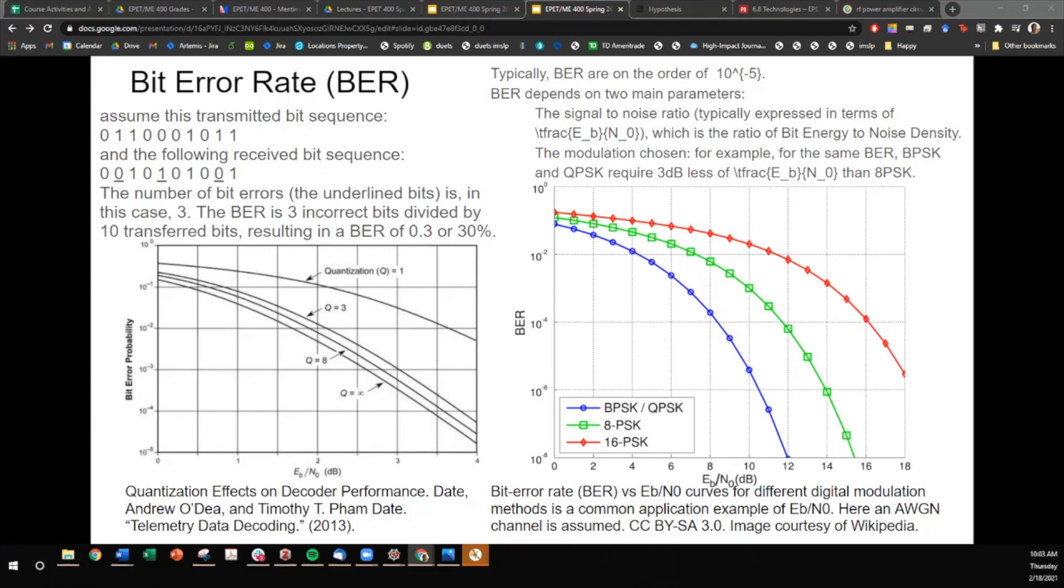What affects bit error rate are signal-to-noise ratio, which you'll see this a lot too, EB over NO, where E is energy, N is noise, so bit energy to noise density. The modulation chosen, so we were talking about earlier, the closeness of bins, the number of levels, so that can also affect the bit error rate. You'll see that bit error rate goes down as you quantize into more levels. Bit error rate goes down if you modulate closer to binary into fewer bins.